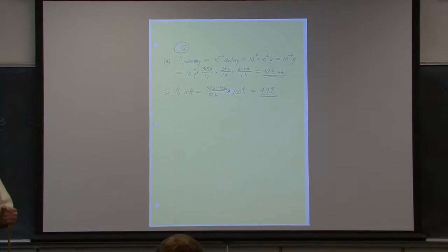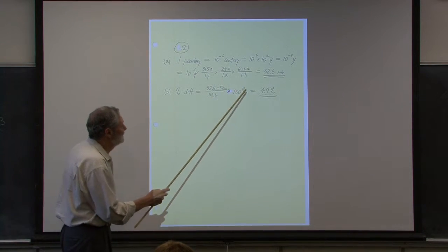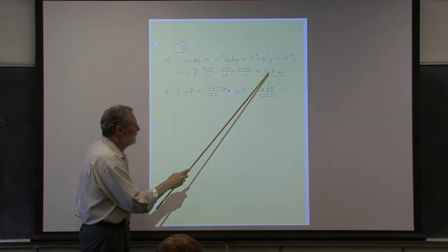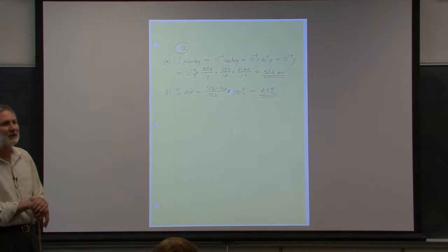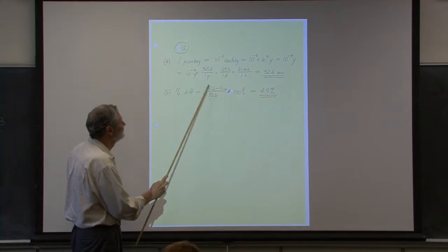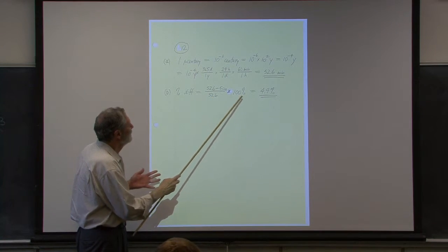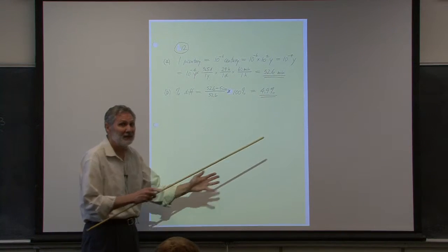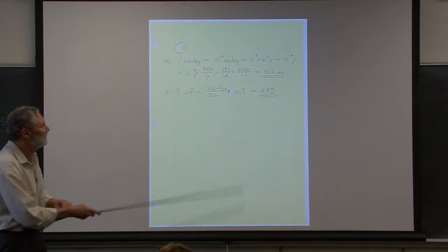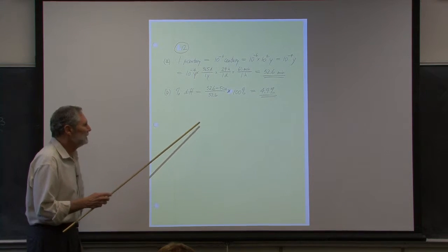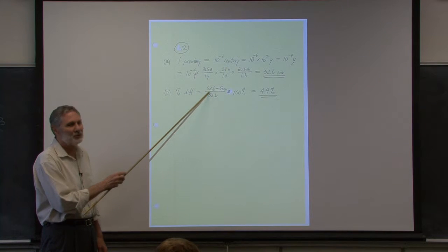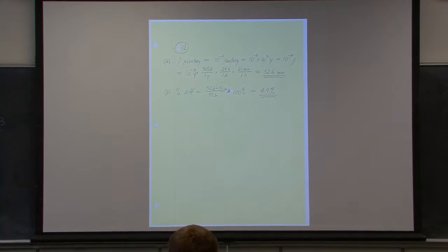The percentage difference is often how we represent differences, particularly in the lab. Students tend to just give the absolute difference — 2.6 minutes — which is meaningful, but the percentage difference is more informative. We take the difference and divide by a reference value (50 or 52.6 minutes; either works for a rough estimate). It comes out to about a 5% difference.